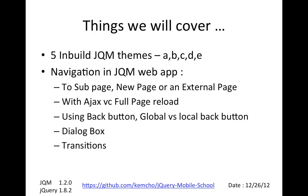jQuery Mobile comes with built-in themes. It has five themes out of the box. A theme is basically a look and feel — color, layout, icons, etc. We will also be going into detail about how you navigate within a jQuery Mobile app.